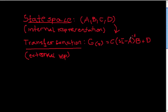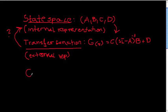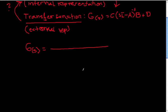The question is: how do we go from the transfer function representation into the state space? Is there a structural way, given the transfer function, to build a state space? The simple answer is yes — given G(s) as a strictly proper or proper transfer function, we can construct the state space.